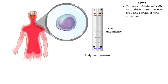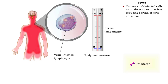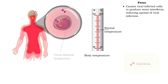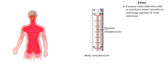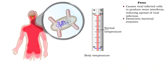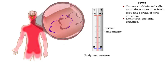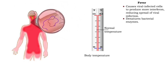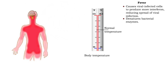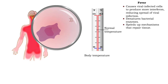Fevers help fight viral infection by increasing the production of interferon. Fever also inhibits infection by damaging bacterial enzymes. Increased temperature also speeds up mechanisms that repair tissue, such as phagocytosis.